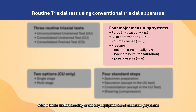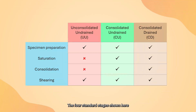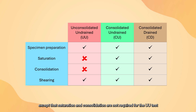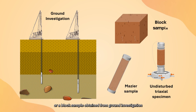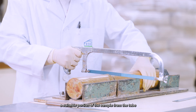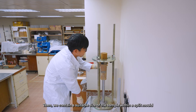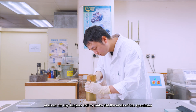With a basic understanding of the key equipment and measuring systems, let us walk through the typical procedures of a routine triaxial test. The four standard stages apply to all three types of routine triaxial tests, except that saturation and consolidation are not required for the UU test. To prepare an undisturbed specimen, the soil is extruded from a sample such as a Mazier or block sample. For a Mazier sample, we first saw-cut a suitable portion of the sample from the tube, then contain a suitable size within a split mold and cut off any surplus soil to make the ends of the specimen flat.